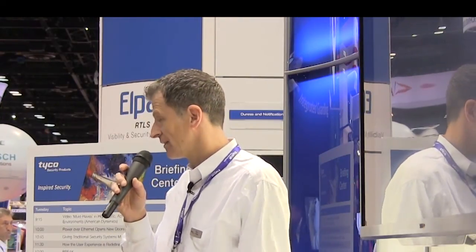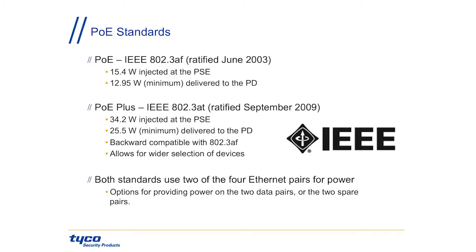Six years later, PoE Plus came out. The need for power grew, and the committees got together and said we can double the power. So now we have 34 watts at the power sourcing equipment, and with line losses, worst case you're still at 25.5 watts at the device. These standards are backward compatible — if you have a PoE Plus switch and a PoE device, don't worry about it; nothing will blow up. They will only ask for the power they can consume.